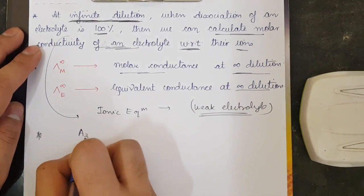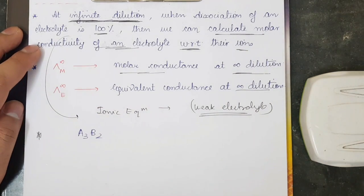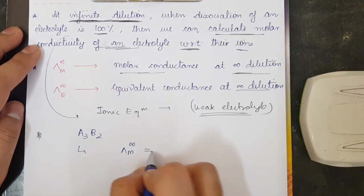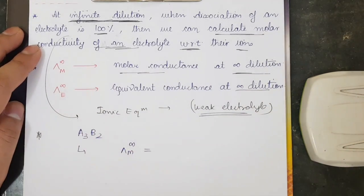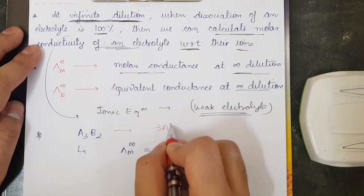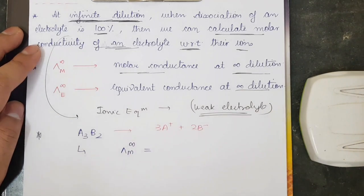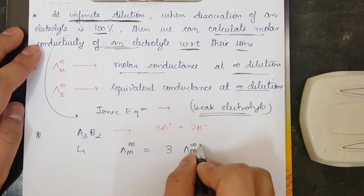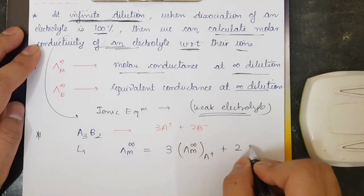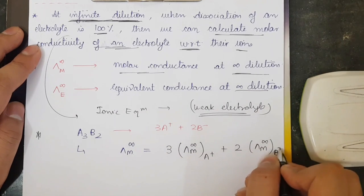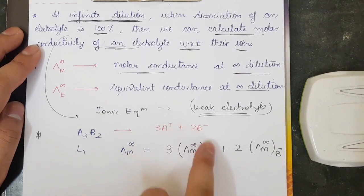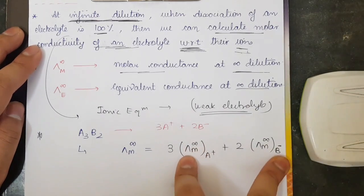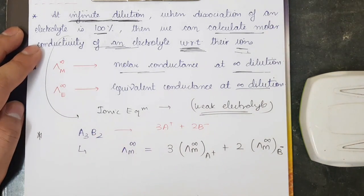Let me take a general example: molecule A3B2 is given. If you are calculating λm∞ for it, you calculate it with respect to the ions. On dissociating, you get 3A⁺ and 2B⁻ (plus/minus can be interchanged). So λm∞ of A3B2 = 3 × λm∞(A⁺) + 2 × λm∞(B⁻). We multiply by the stoichiometric coefficients because we are summing with respect to their ions.